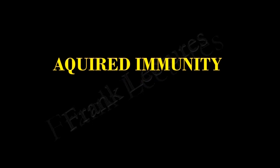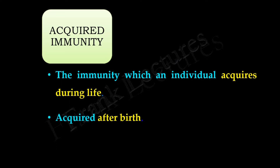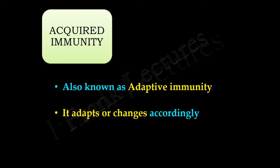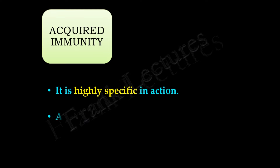Acquired immunity, commonly known as adaptive immunity, forms the third line of defense. It is the immunity which an individual acquires during life — that is, it is acquired after birth. When a microbe is encountered by the adaptive immune system, it learns the most effective way to deal with it, adapting and changing accordingly. Acquired immunity is also known as specific immunity because it is highly specific in action.